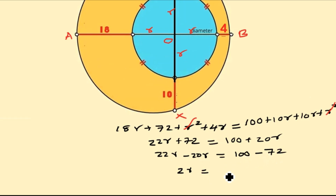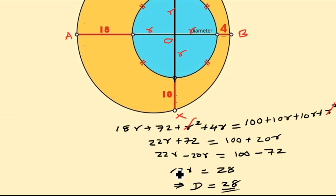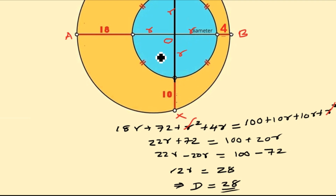Remember, we were asked to determine the diameter of the smaller circle, and the diameter is 2r. Since 2r equals 28, the diameter of the smaller circle is 28. That is the simplest way to determine the diameter of the smaller semicircle — by making it a complete circle and using the concept of intersecting chords. Thank you for watching and see you again in our next video.